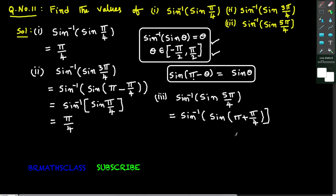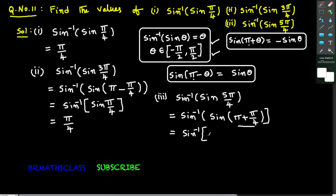This is of the form sin(π + θ). When π is there, the function remains the same — so this is sin θ. Now π + θ lies in the third quadrant. In the third quadrant, tan and cot are positive; all remaining functions are negative. So sin is negative. Therefore sin(π + θ) = −sin θ. So sin(π + π/4) = −sin(π/4).